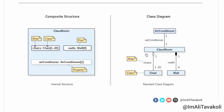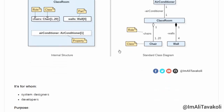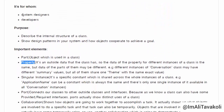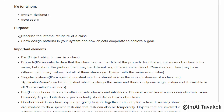Here is our classroom class and its related classes. The composite structure is for system designers and developers. Its purpose is to describe the internal structure of a class, show design patterns in your system, and show how objects cooperate to achieve a goal.